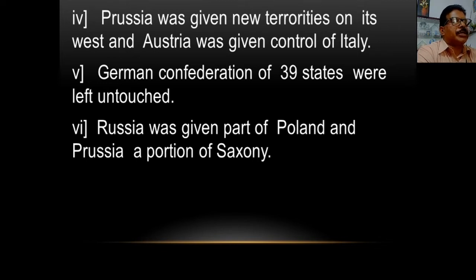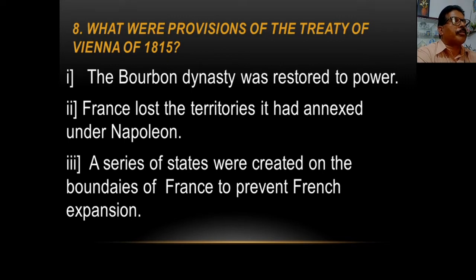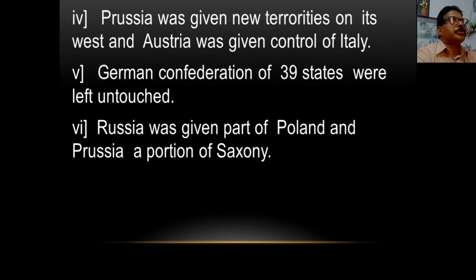The German confederation of 39 states were left untouched. And the next point: Russia was given part of Poland and Prussia was given a portion of Saxony. So these were the provisions of the Treaty of Vienna of 1815 — the Bourbon dynasty restored to power, France lost its territories, buffer states created on France's borders, Prussia and Austria gained territories, and Russia received part of Poland.